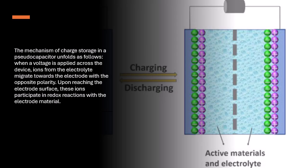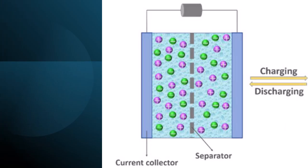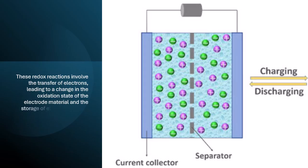The mechanism of charge storage in a pseudo-capacitor unfolds as follows. When a voltage is applied across the device, ions from the electrolyte migrate towards the electrode with the opposite polarity. Upon reaching the electrode surface, these ions participate in redox reactions with the electrode material. These redox reactions involve the transfer of electrons, leading to a change in the oxidation state of the electrode material and the storage of electrical charge.